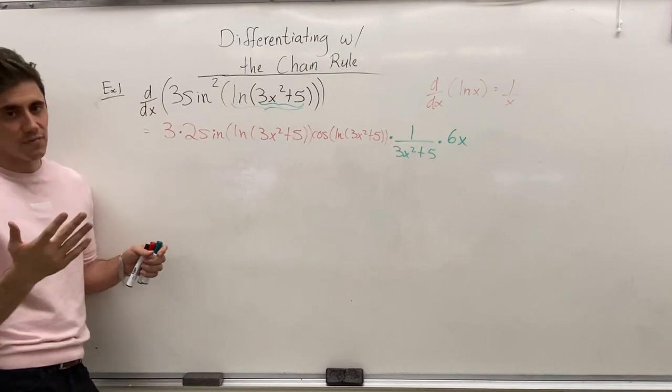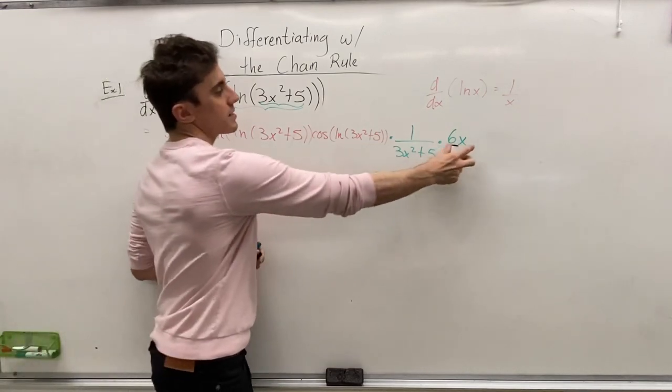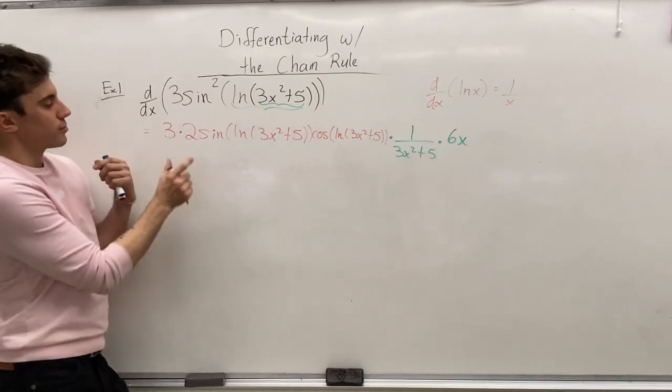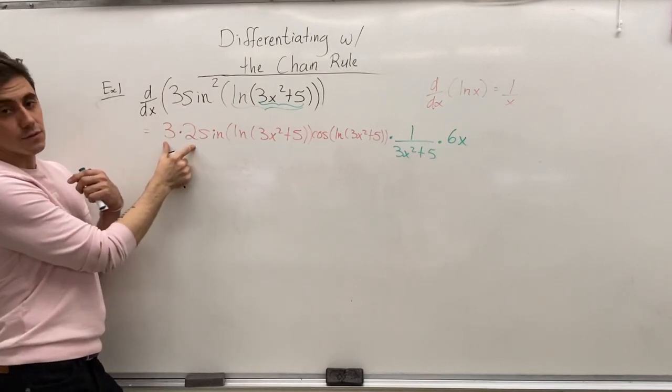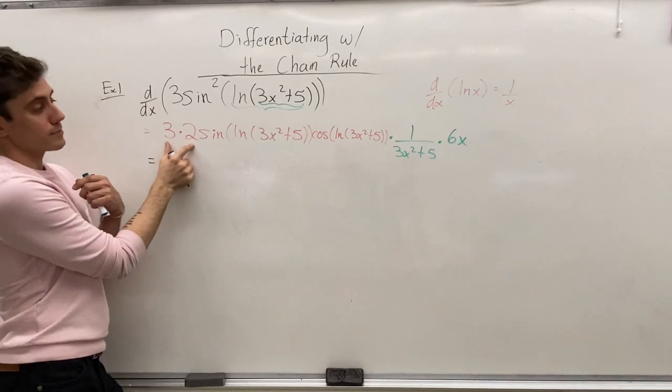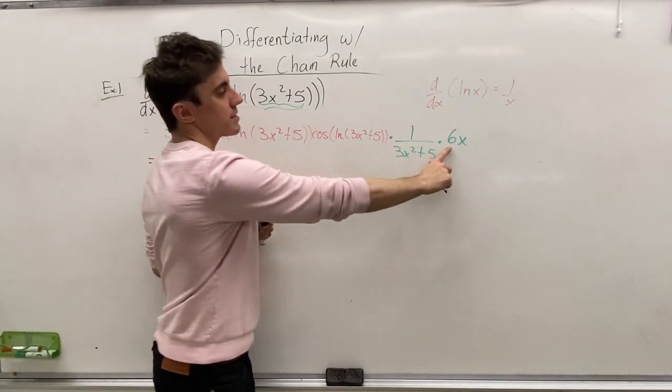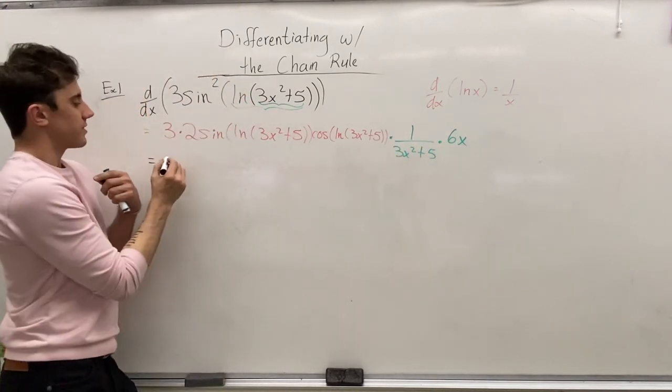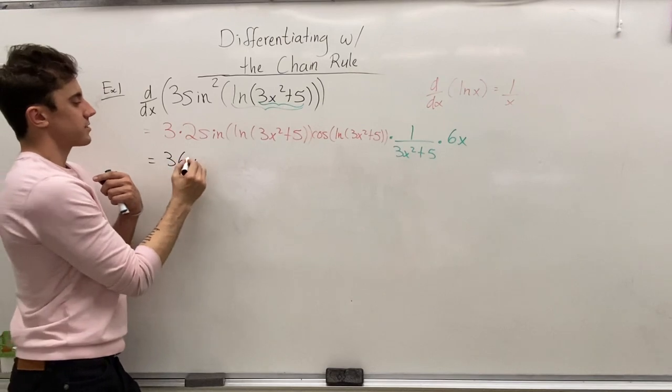Let's put it all together and simplify it a little bit. So, the 6x at the end can multiply with the 3 times the 2 at the front. And so, we'll have 3 times 2 times 6 times x, giving us 36x to start off.